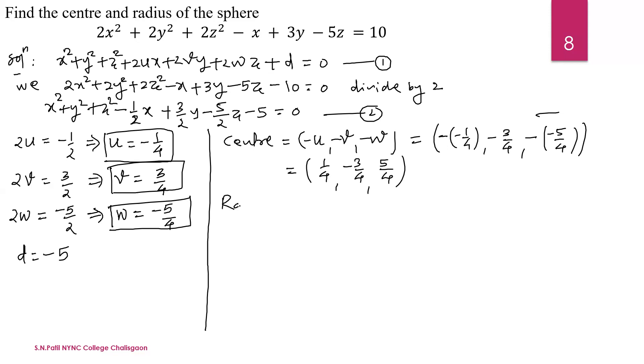Let us find the radius. In general form, the radius of the sphere is obtained by the formula √(u² + v² + w² - d). So, we already calculated u, v, w and d. Substitute here. That is (-1/4)² + (3/4)² + (-5/4)². The value of w. Now minus d. D is minus. Minus minus plus plus 5.